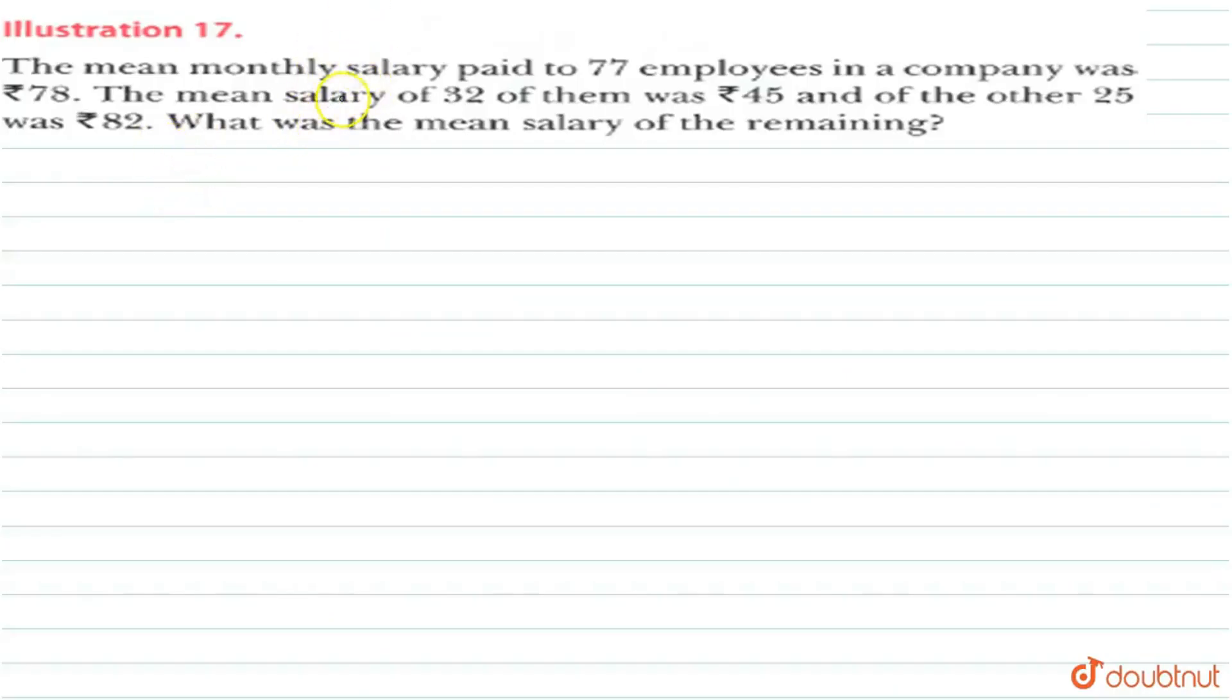Hi guys, let's see what is the question. The question is, the mean monthly salary paid to 77 employees in a company was Rs.78. The mean salary of 32 of them was Rs.45 and the other 25 was Rs.82. What was the mean salary of the remaining?